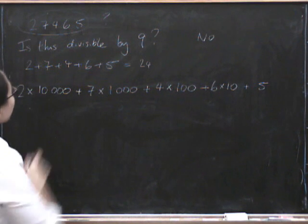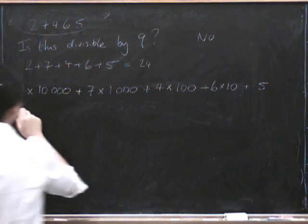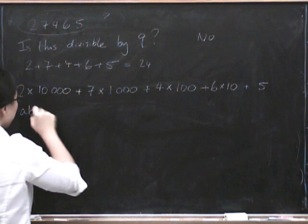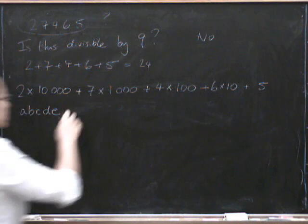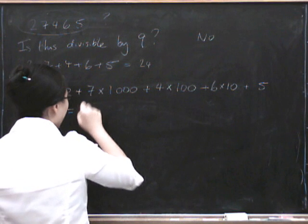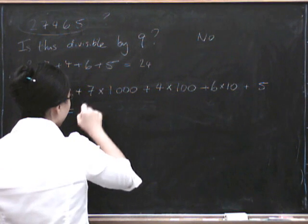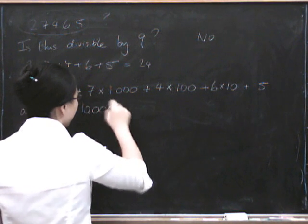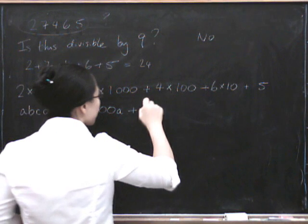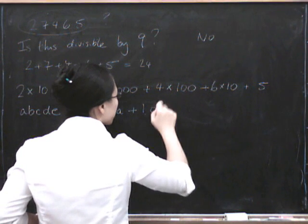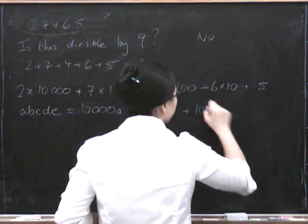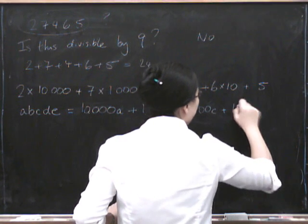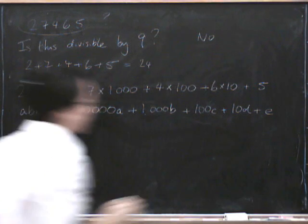So in general, if we wrote down a 5-digit number as A, B, C, D, E, where these are the 5 digits, we'd be really saying that that was A times 10,000, which we now might as well write as 10,000A, plus 1,000B, plus 100C, plus 10D, plus E.